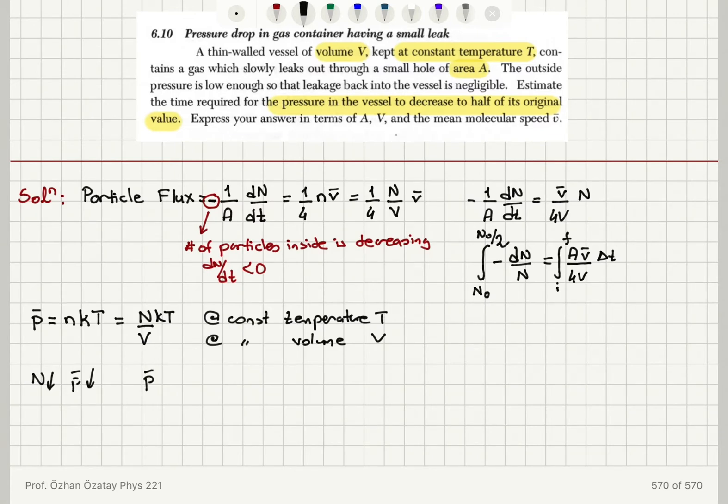With these constraints, P-bar is proportional to the number of particles. So P-bar becomes P-zero-bar over 2 implies if I have initial number of particles N-zero, they will become N-zero over 2.